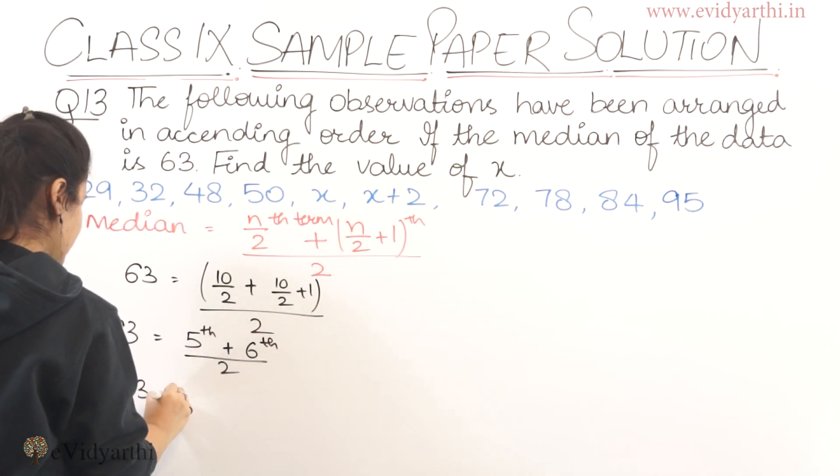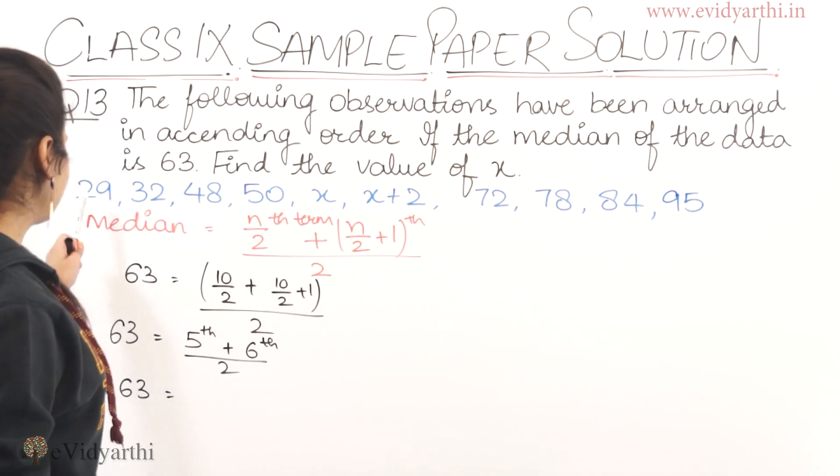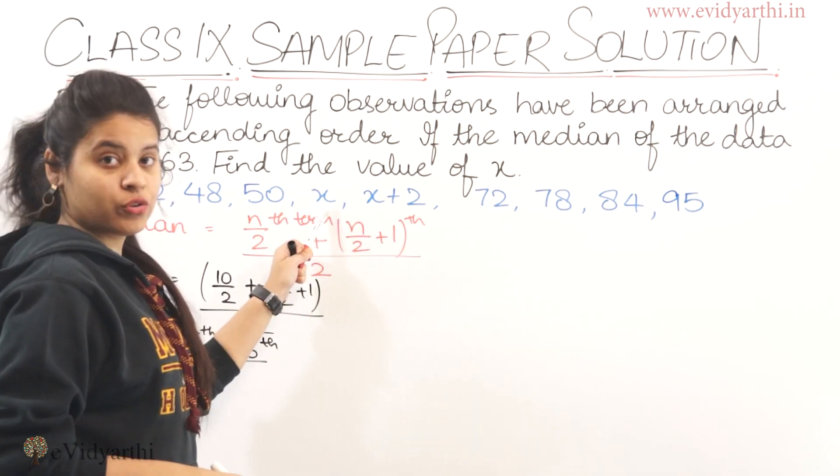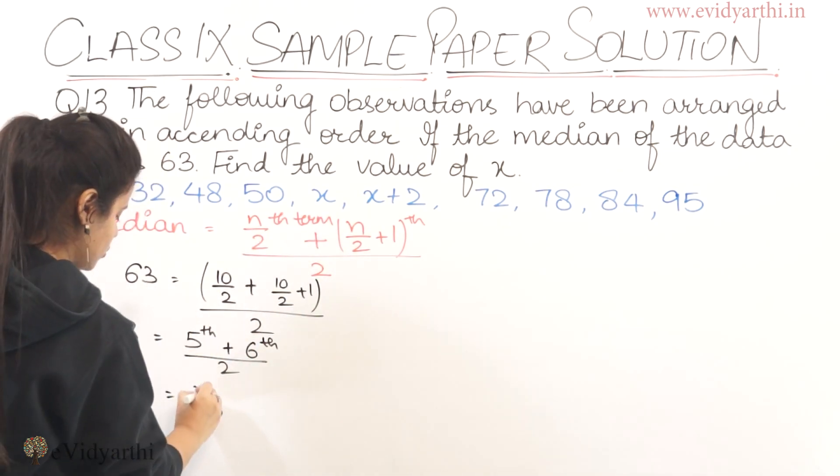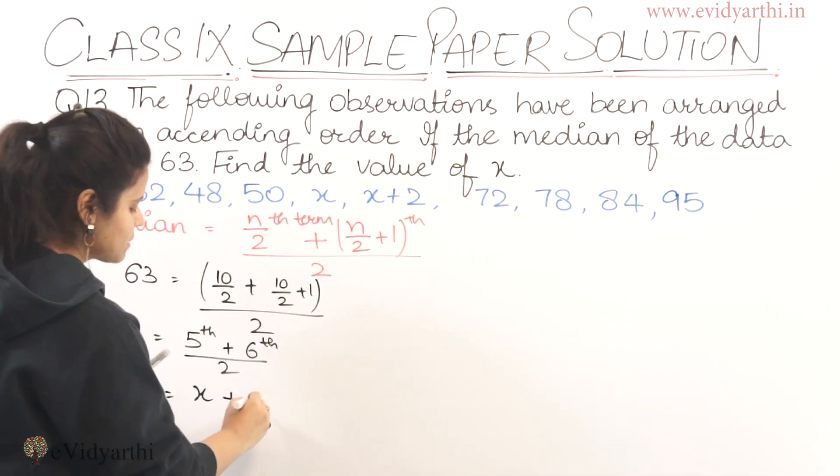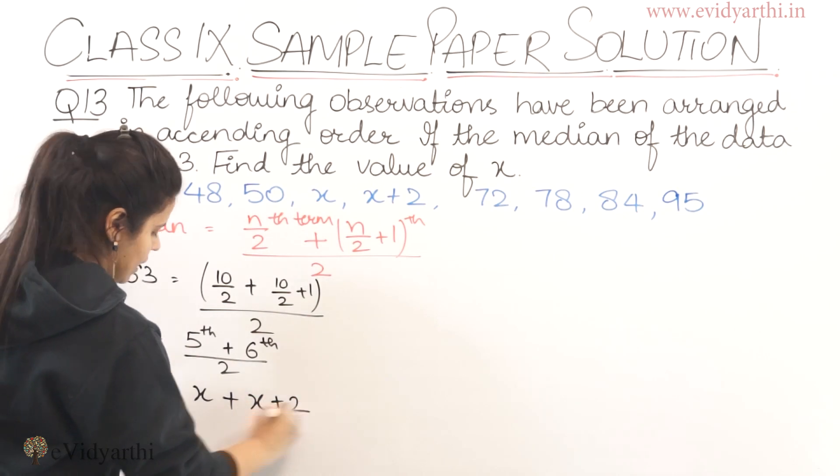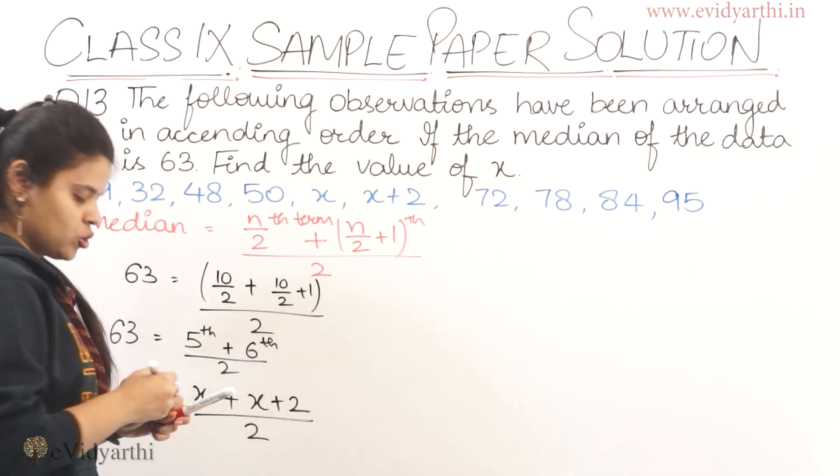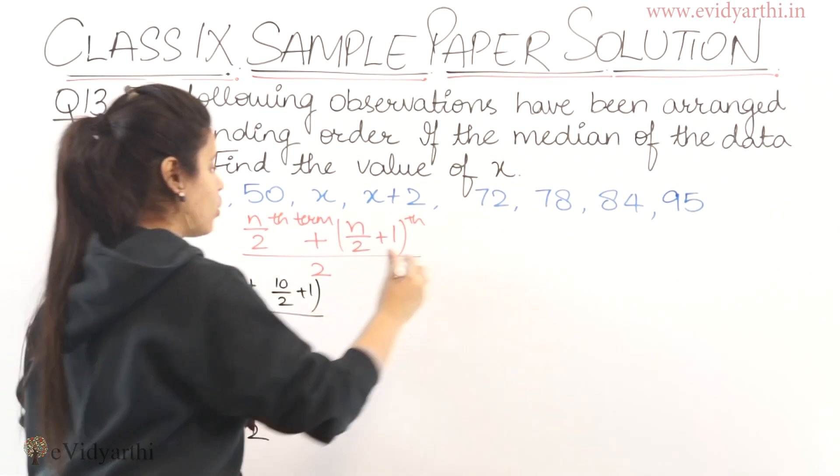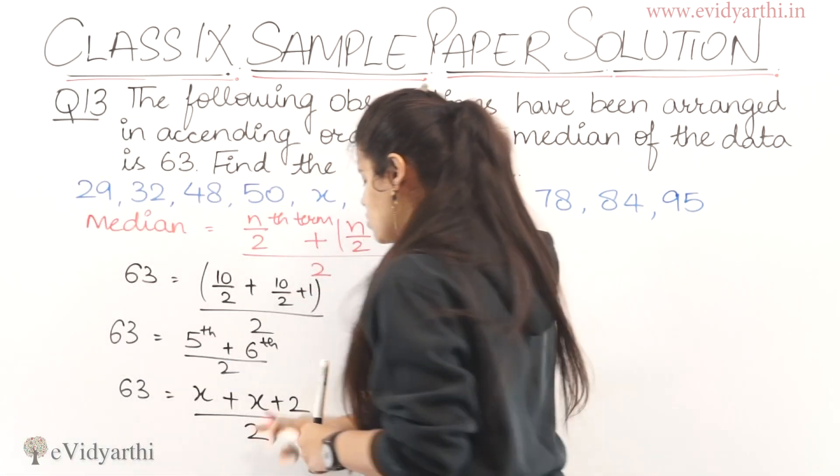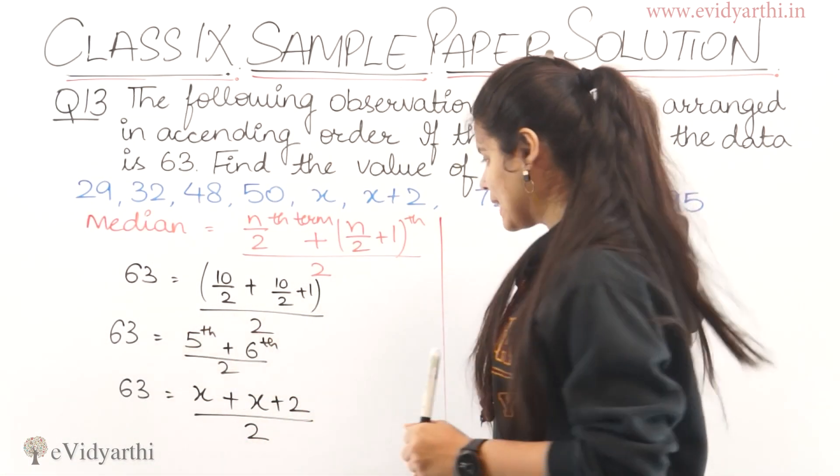So again 63 equals to 5th and 6th term. 1, 2, 3, 4, 5th term is x. So we'll replace the 5th term as x plus 6th term is x plus 2. And we will solve this 2. We will multiply this 2 here.